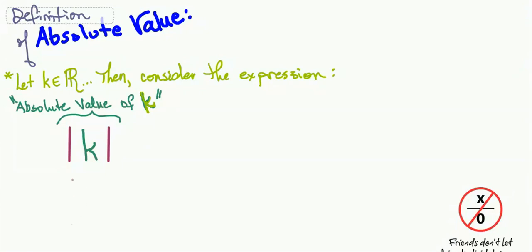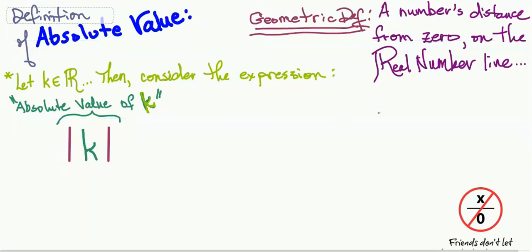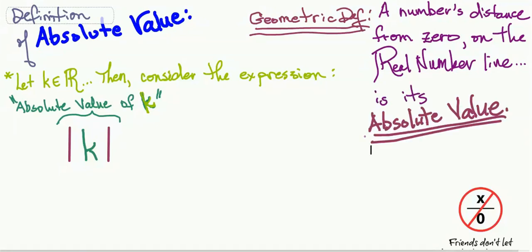Let the variable k be an element of the real numbers — k can be any real number. We're going to consider this statement: the absolute value of k. We have a geometric definition of absolute value that makes it simpler for students to understand. A number's distance from zero on the real number line is its absolute value. So absolute value is basically just a distance.